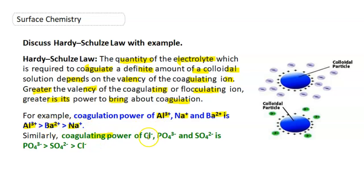Similarly, coagulating power of negative ions or anions: Chloride, Phosphate, and Sulphate. Phosphate has highest valency 3-, therefore highest coagulating power, then Sulphate, then Chloride.